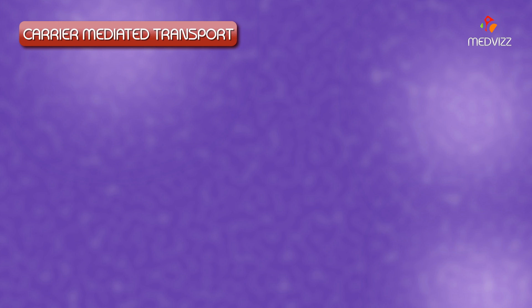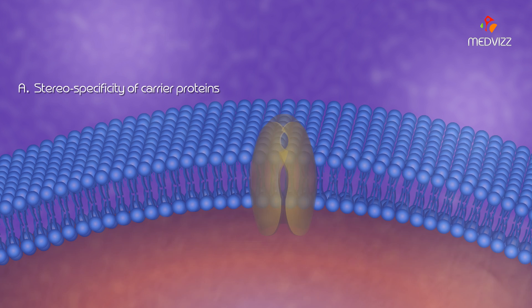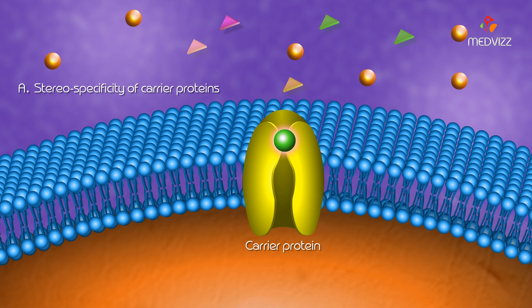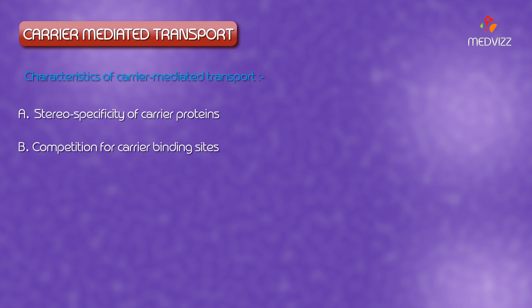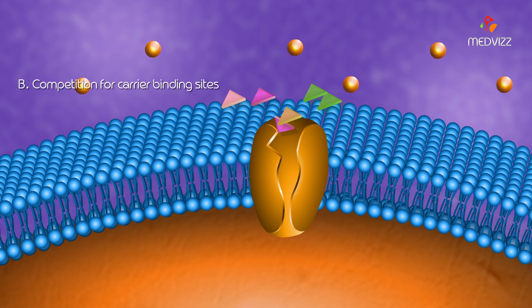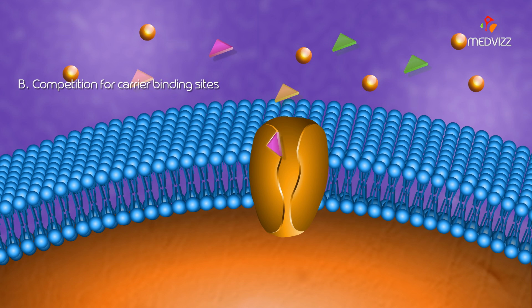Carrier-Mediated Transport. The characteristics of carrier-mediated transport are: stereospecificity of carrier proteins — the carrier protein recognizes only one isomer of a substance — and competition for carrier binding sites, where substances that have similar structures compete to bind to the carrier protein.